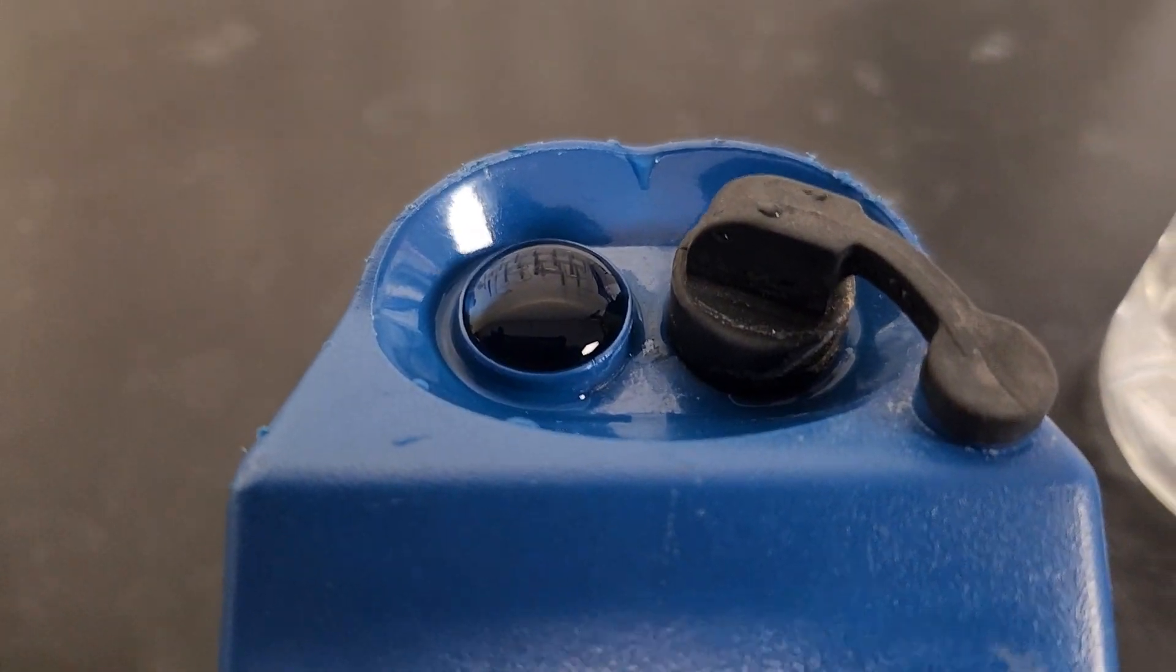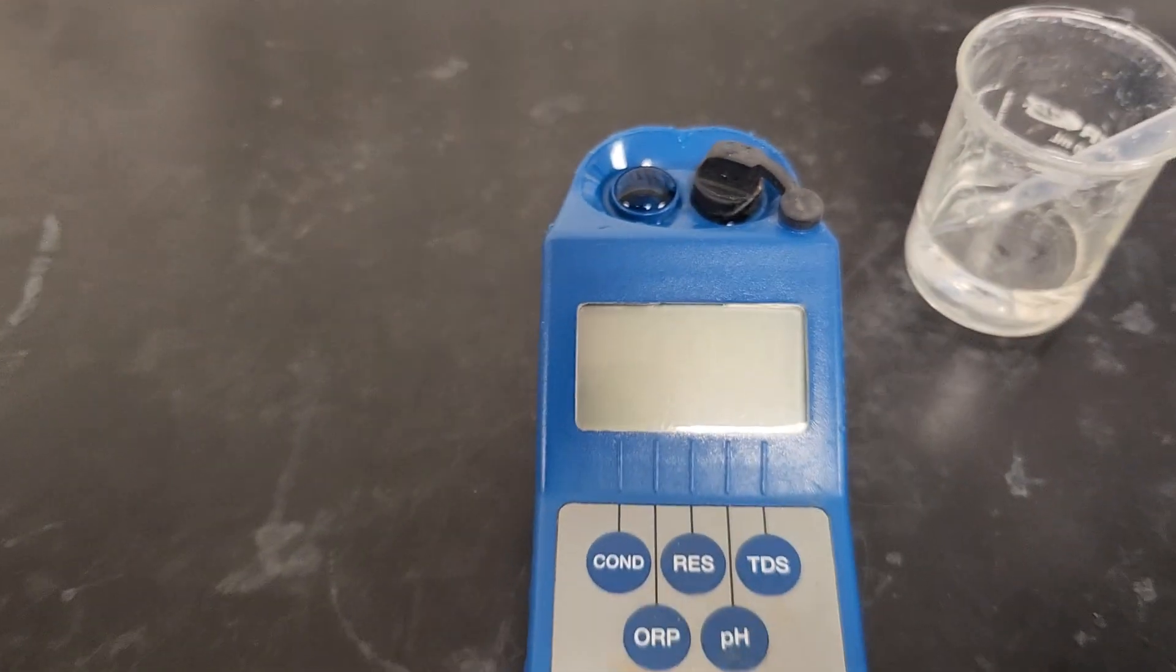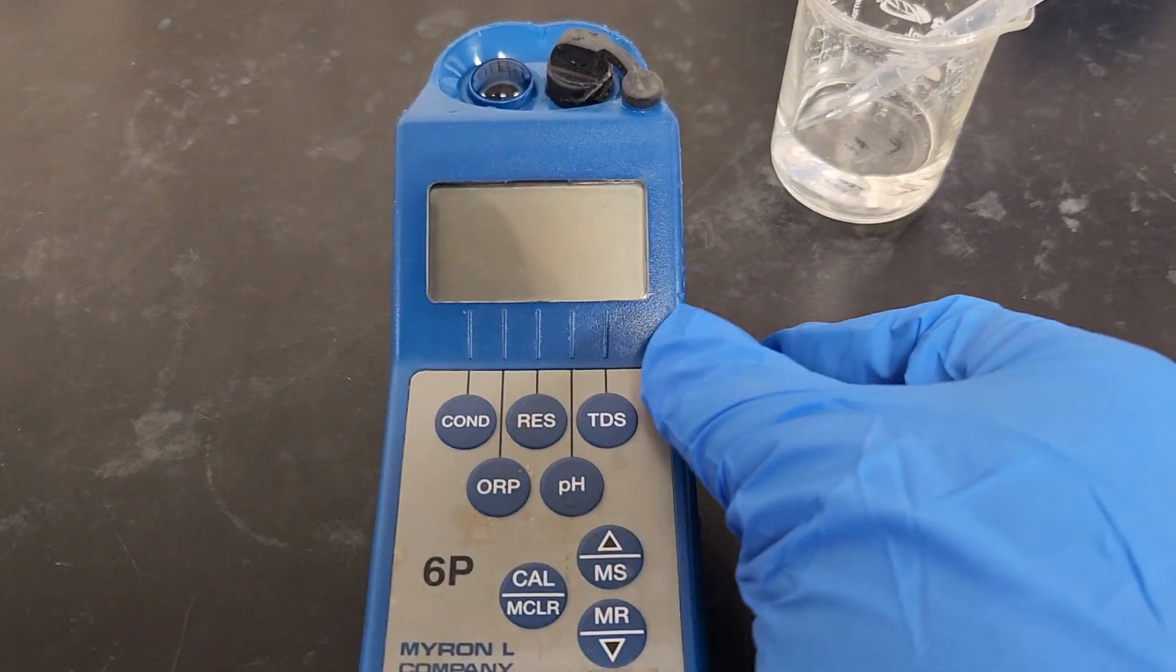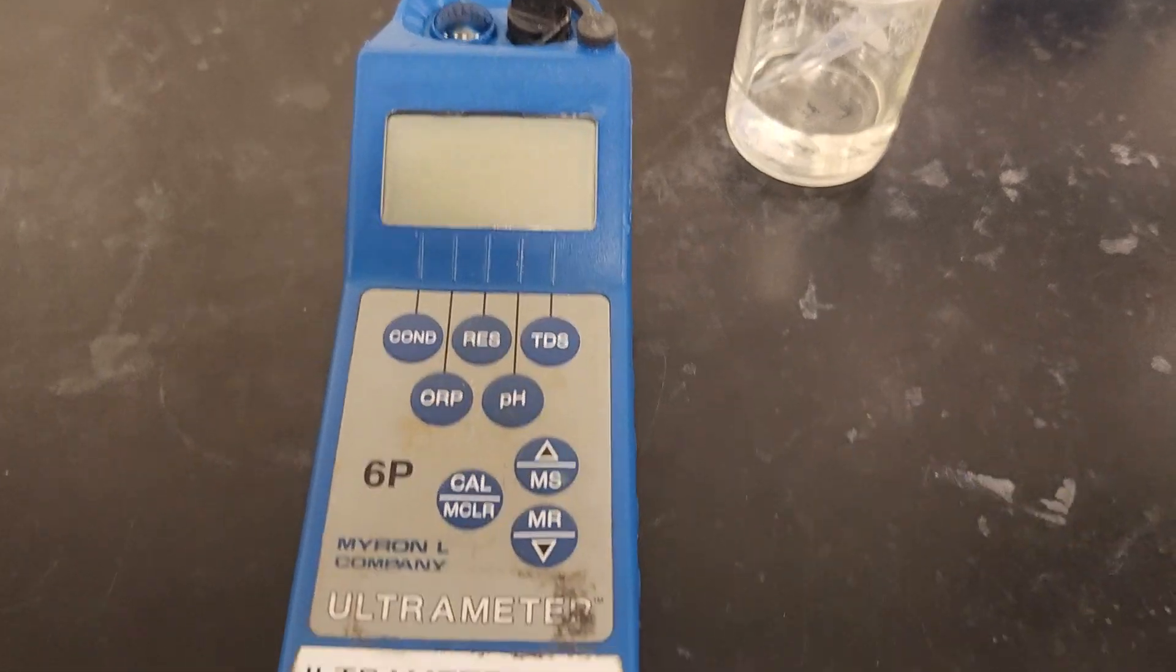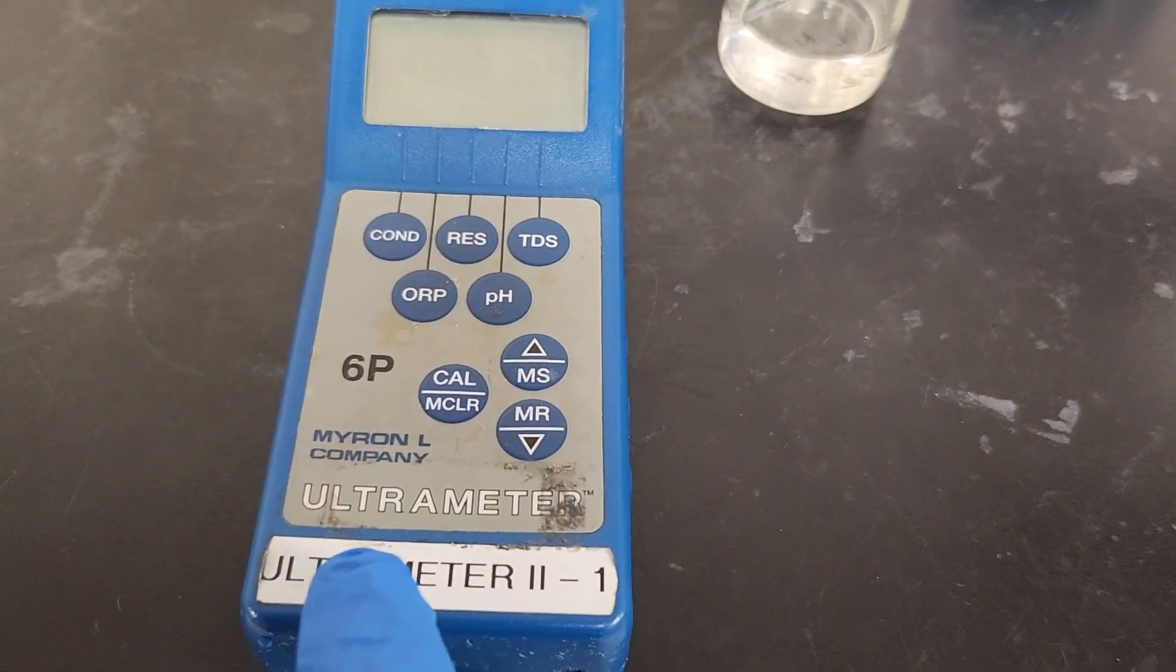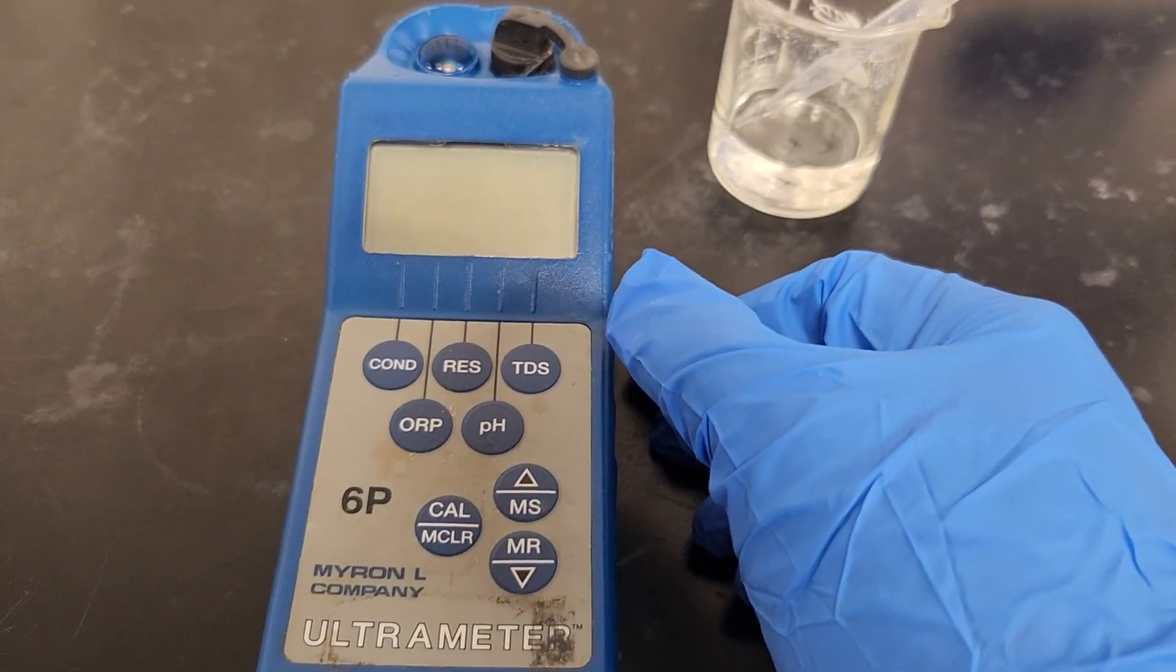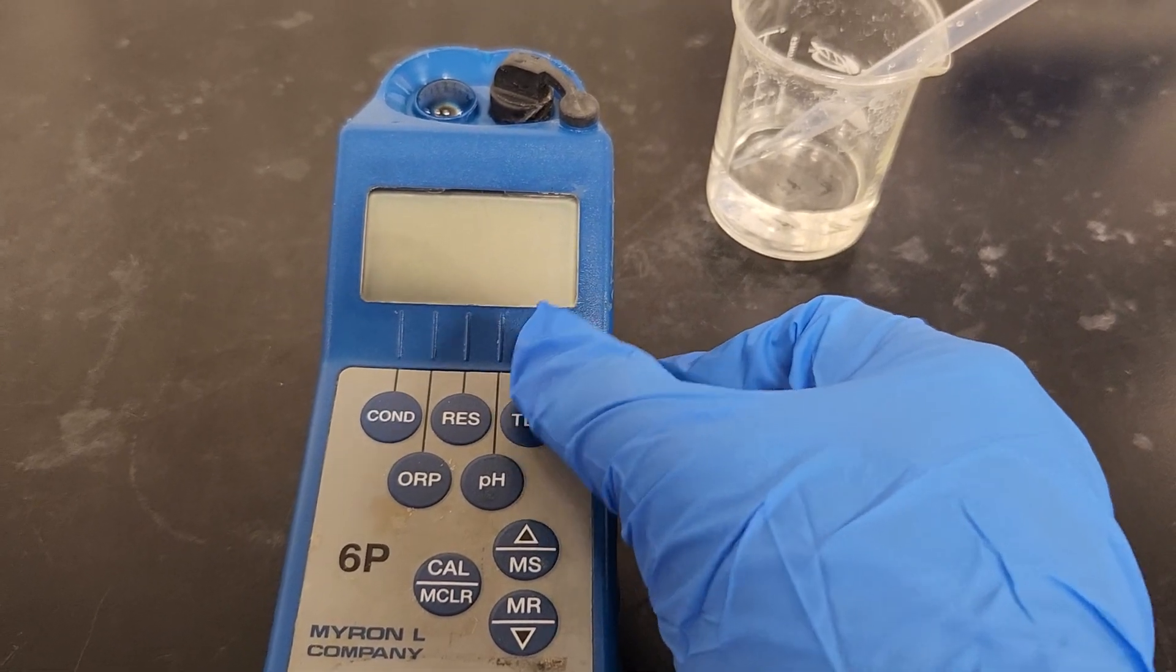And when you're done with that, everything is good, you just come and you press the TDS, total dissolved solid. And we are using the Ultrameter for this measurement, so press the total dissolved solid.